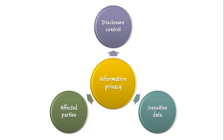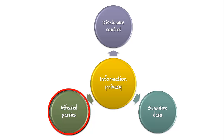The third major facet of information privacy is the affected party, which refers to the party or parties that would be negatively impacted if private information were to be disclosed. Note that a party in this sense might be a person, a group, an organization, a government, or any combination thereof.